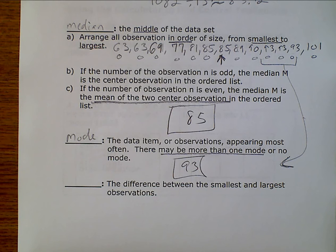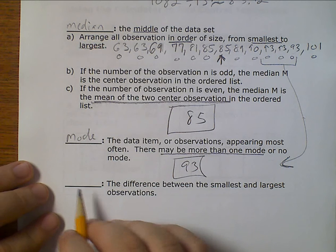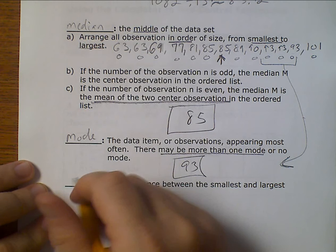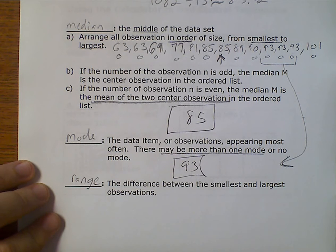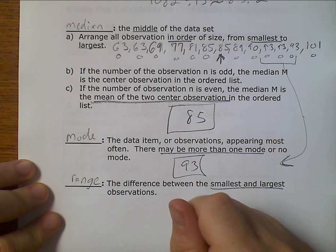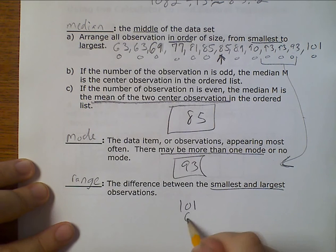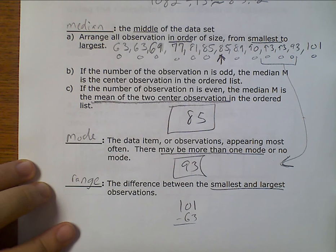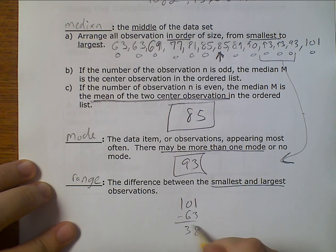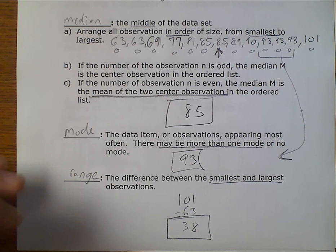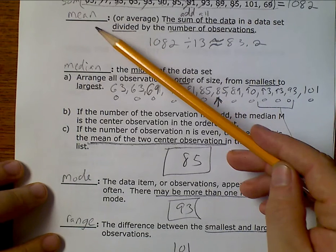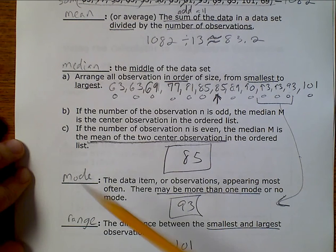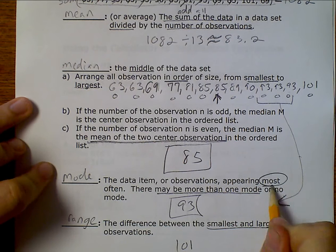Our last measure, called the range, doesn't actually measure central tendency — it just tells us the difference between the smallest and largest values. My largest is 101 and my smallest is 63, so when I subtract those I get 38. That is our range. To summarize: mean is average, median is middle, mode is most, and range is the difference.